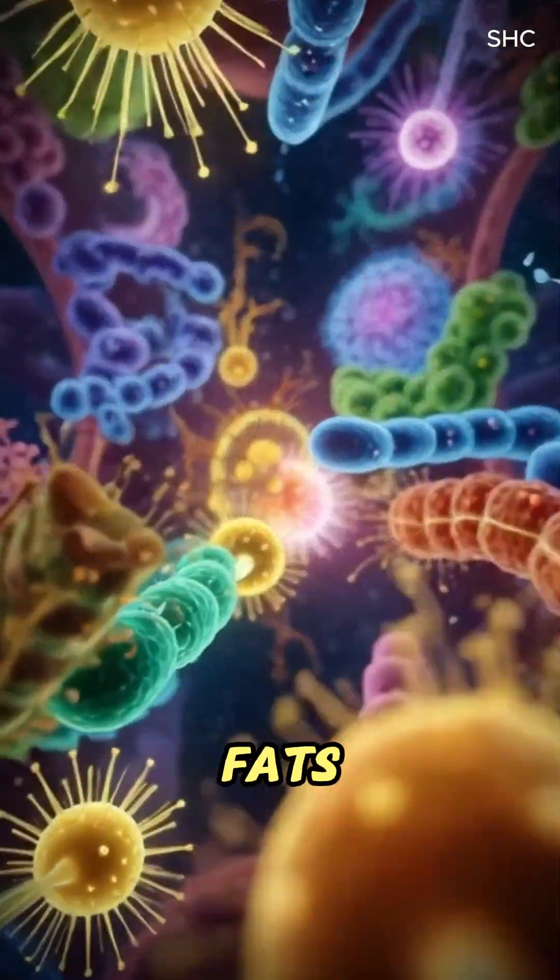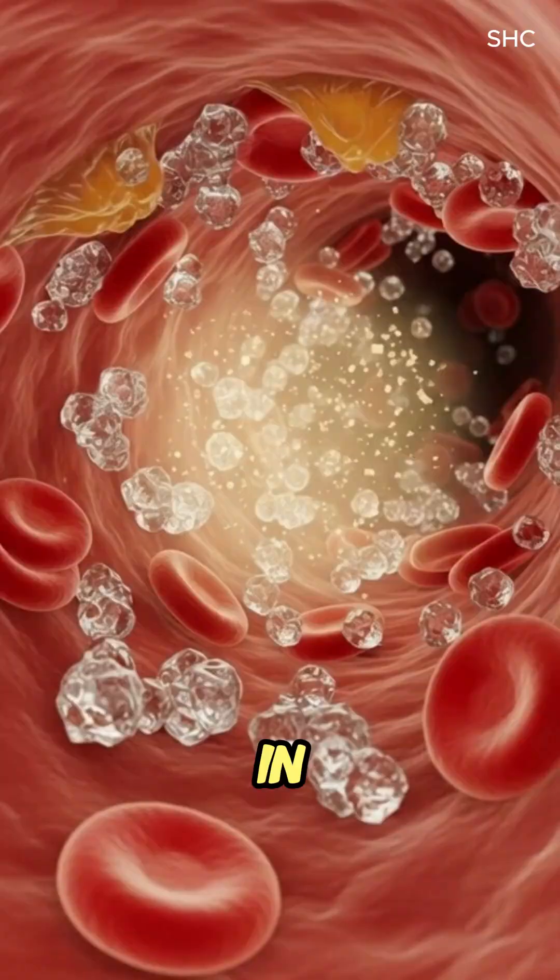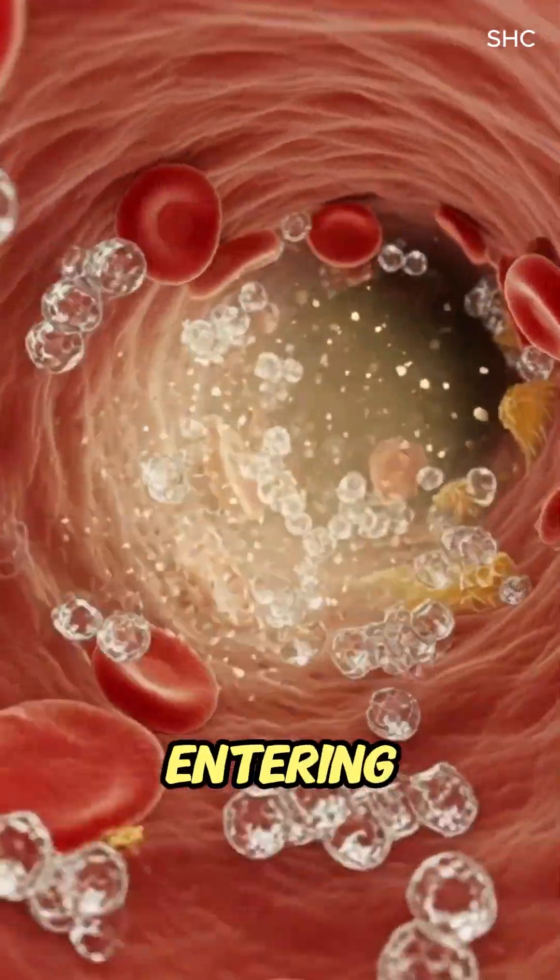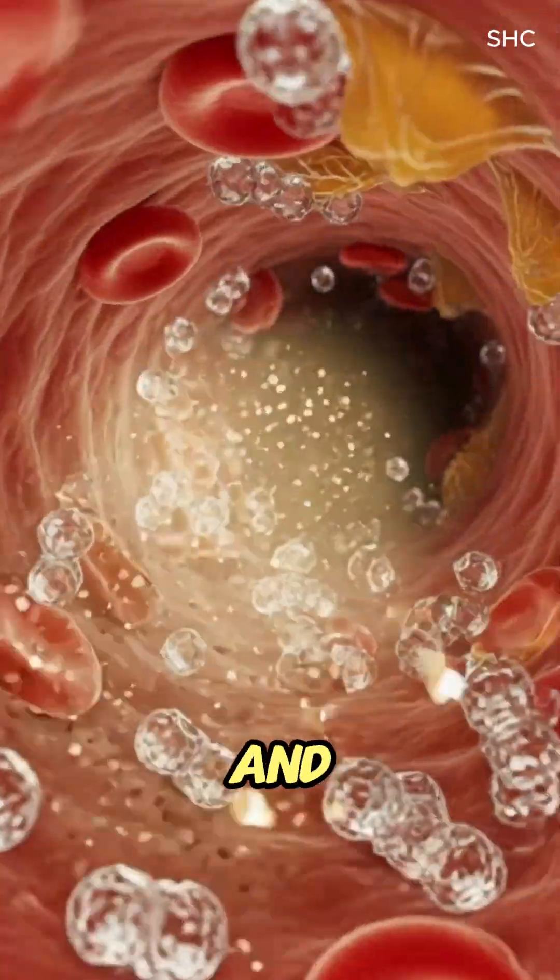Nutrients, especially sugars and fats, begin to absorb in the small intestine, entering the bloodstream through the villi and capillaries.